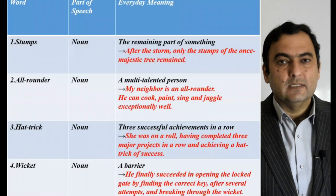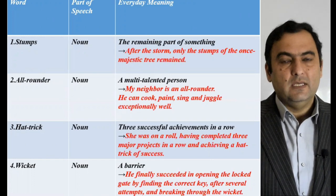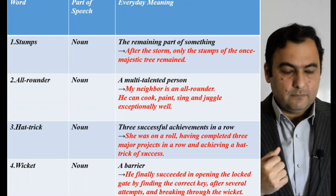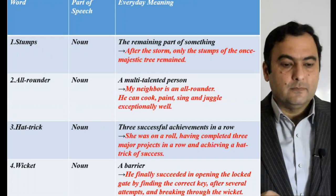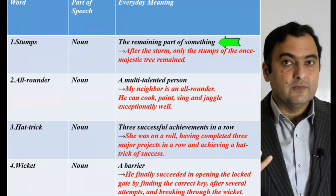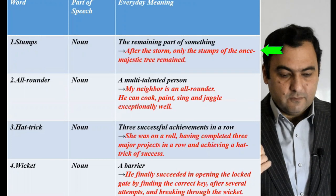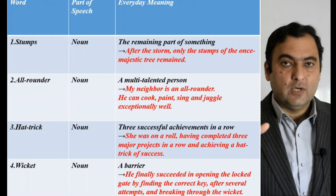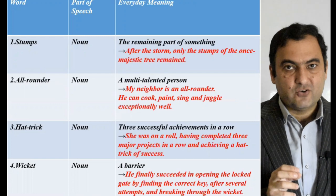Moving on, we'll look at certain nouns borrowed from the game of cricket that are used in day-to-day conversation with a slightly different meaning. The first noun is stumps. Stumps means the remaining part of something. An example sentence: after the storm, only the stumps of the once majestic tree remained — the storm destroyed the tree and now just the remaining stumps are left.